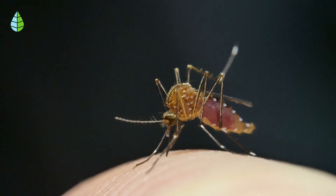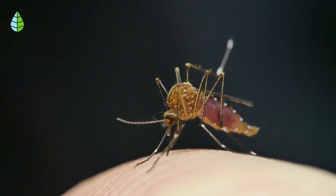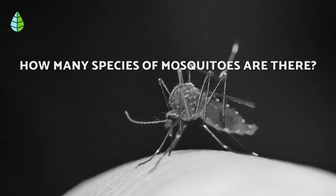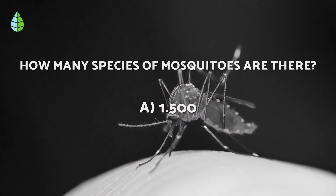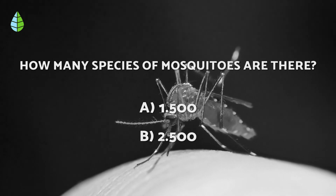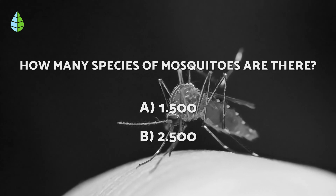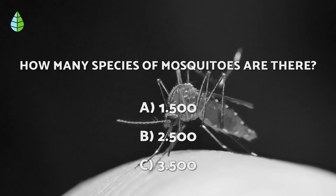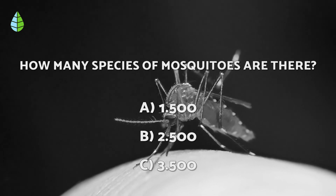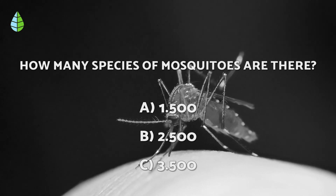Before we continue, let's put you to the test. How many species of mosquitoes are there? Is it A: 1,500, B: 2,500, or C: 3,500? Think about it because you'll be able to find out at the end of the video.